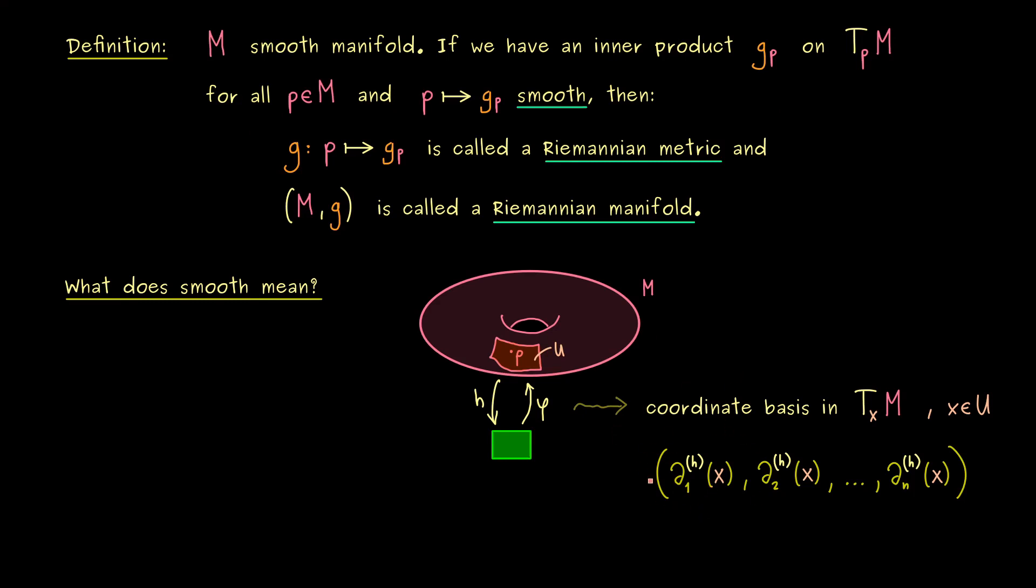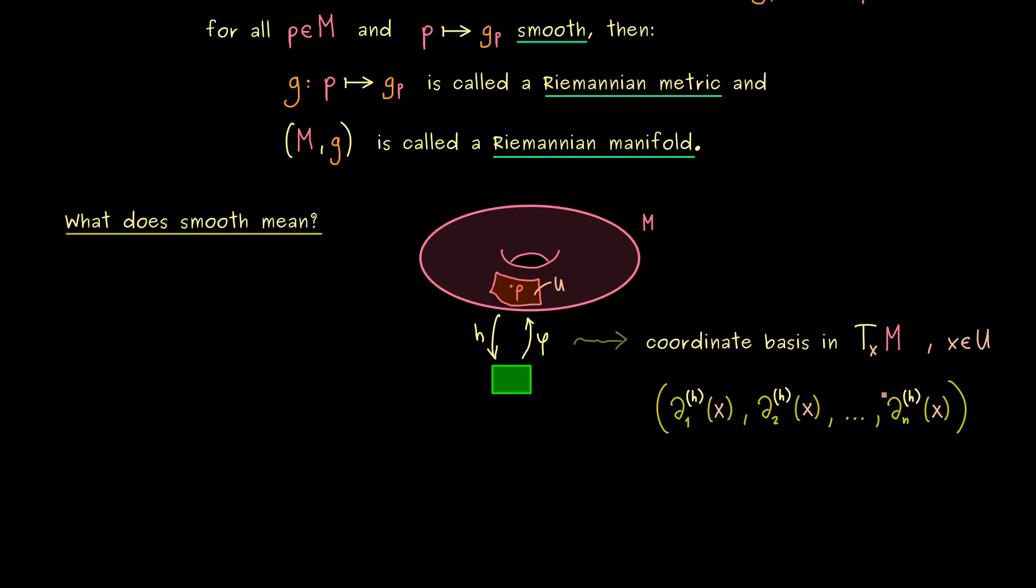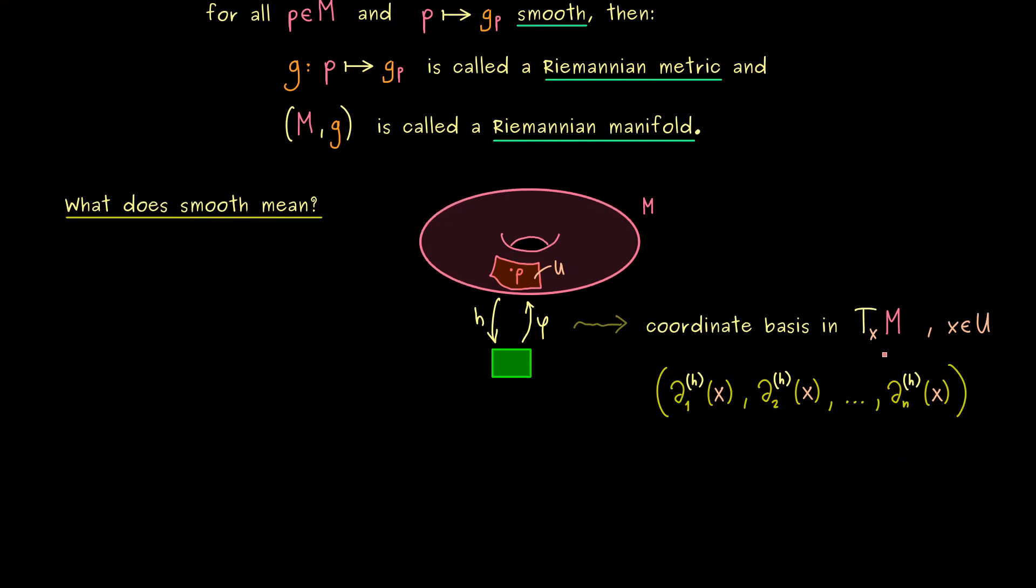But you know these are just n vectors in our tangent space T_x M. This implies we are able to put them into our inner product we called g_x. However, of course we can only put two vectors in. So let's take del_i and del_j. So we know here the outcome has to be a real number. And this one we simply call g with indices i and j.